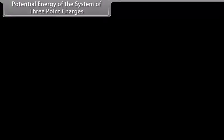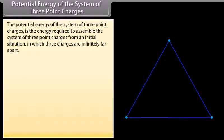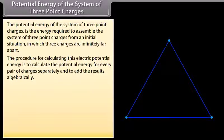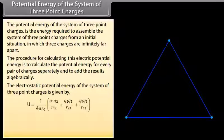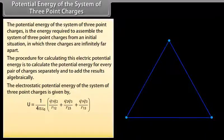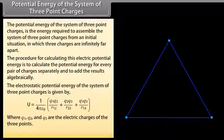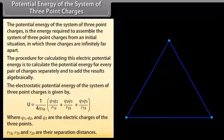The potential energy of a system of three point charges is the energy required to assemble them from infinitely far apart. This is calculated by computing potential energy for every pair separately and adding algebraically. The electrostatic potential energy is U = (1/4πε₀) × [(Q1Q2/R12) + (Q2Q3/R23) + (Q1Q3/R13)], where Q1, Q2, Q3 are the charges and R12, R13, R23 are their respective separation distances.